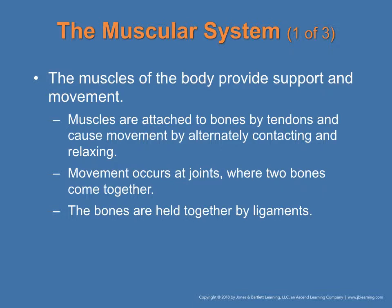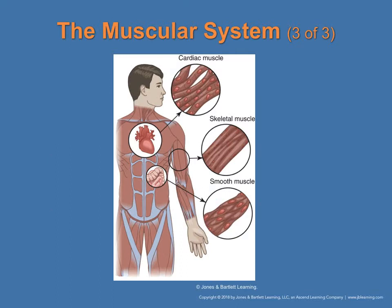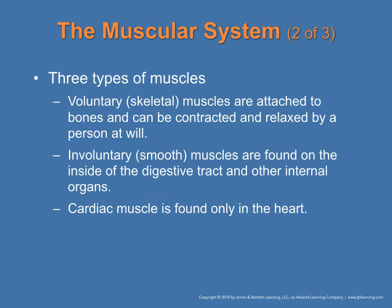The muscles of the body provide support and movement. Muscles are attached to bones by tendons and cause movement by alternating contraction and relaxation. Movement occurs at joints where two bones come together; bones are held together by ligaments. Make sure to understand the difference between tendons and ligaments. There are three types of muscle groups: cardiac muscle, skeletal muscle, and smooth muscle. Skeletal muscles are voluntary muscles; cardiac and smooth muscles are involuntary.